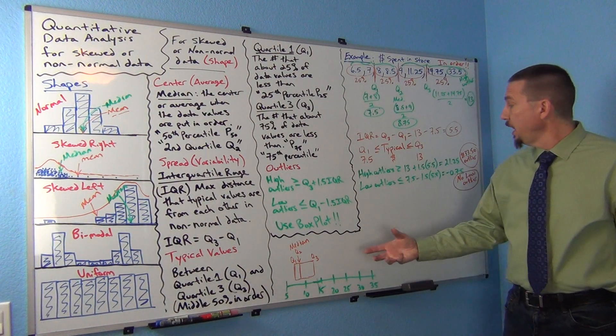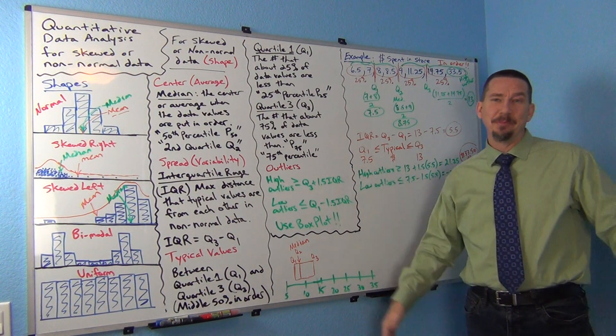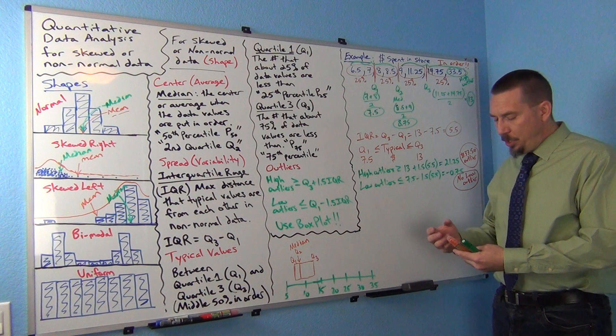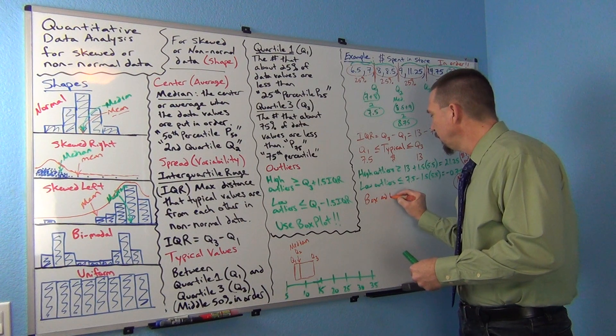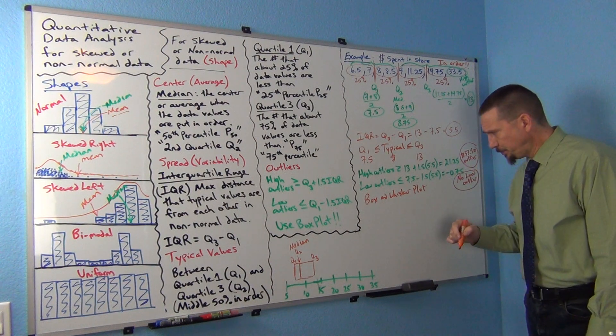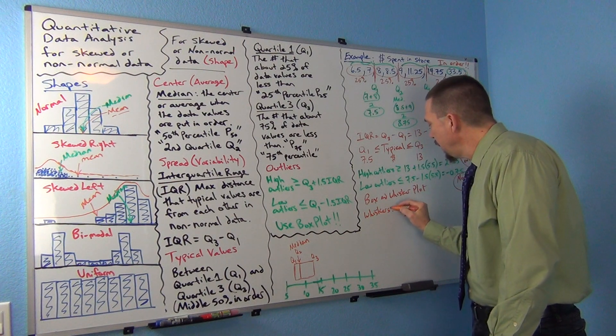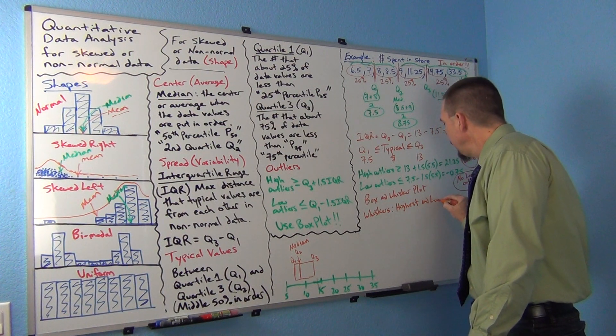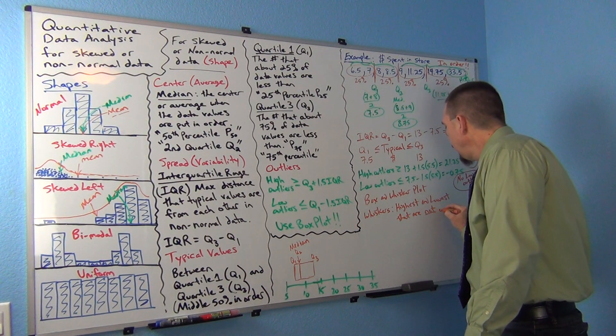Okay, now this was often called a box and whisker plot, because it actually has whiskers on the box. I think it came from like cat whiskers or something. It reminds people of that. So the whiskers go to, so this is what we call a box and whisker plot, or just box plot for short.